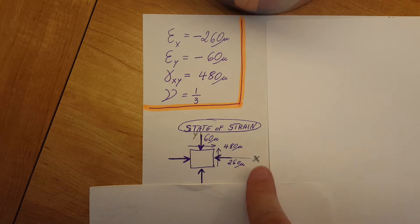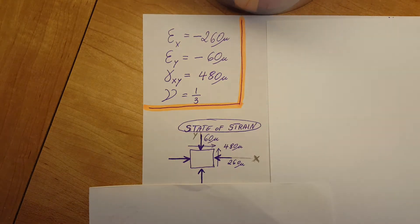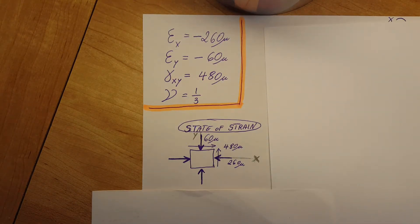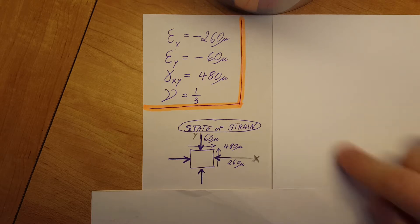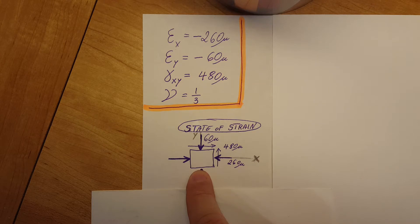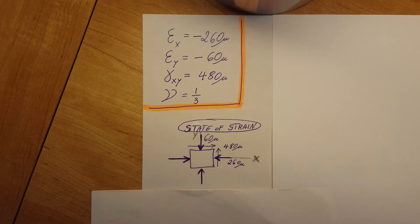Here is our little square with the x direction and y direction, and all our arrows showing the information we have. The first thing to understand is that when they tell us the surface of this plate is unstressed, that means we do not have any stress in the z direction — perpendicular to the table or to this paper.